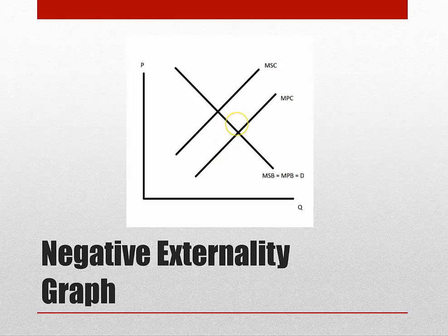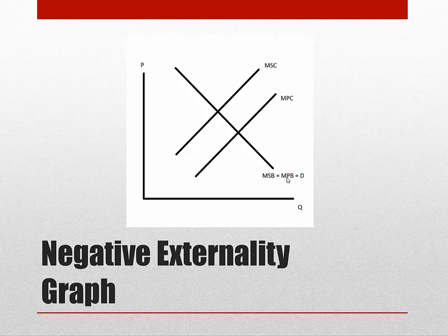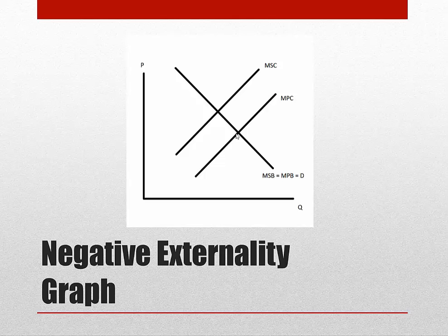This graph shows negative externalities. Like the other graph, there are three lines: the marginal social cost line, the marginal private cost line, and the marginal private benefit line. This time, the marginal social benefit line is equal to the marginal private benefit line, because it is a negative externality. Therefore, the good hurts society, and the only benefit to society is given to the firm that produces it. The equilibrium point is where the marginal private benefit is equal to the marginal private cost. However, the equilibrium production is too high and the price is too low. The government can choose to tax the good to reduce consumption, shifting the equilibrium price to where the marginal social cost is equal to the marginal social benefit. This difference between the marginal social cost line and the marginal private cost line is the negative externality.